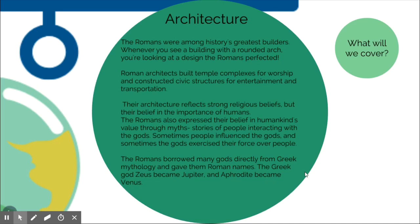Now let's talk about the architecture that resulted from that background. The Romans were amazing builders — Roman architects built temple complexes for worship and civic structures for entertainment and transportation. Their architecture reflects strong beliefs in the importance of humans, similar to what we talked about with Greece. The Romans borrowed many gods directly from Greek mythology and just gave them new names — that's why you might be confused between Zeus and Jupiter, or Aphrodite and Venus.